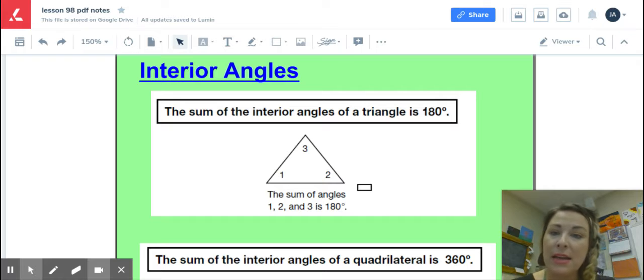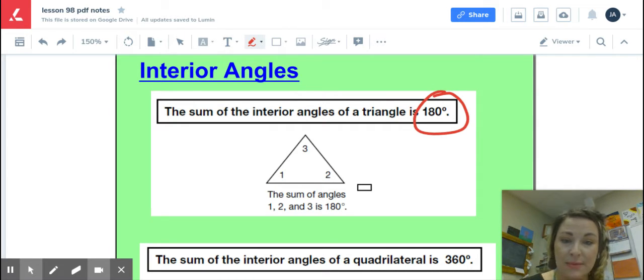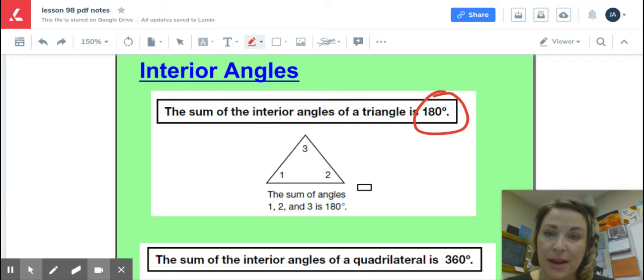Triangles and quadrilaterals are different in that case. The sum of the interior angles of a triangle, no matter what type of triangle it is, how big it is, whatever, it will always equal 180 degrees. The sum of those interior angles.